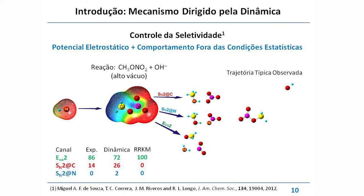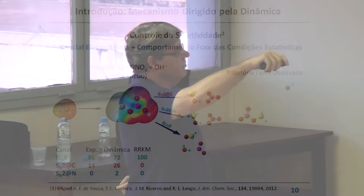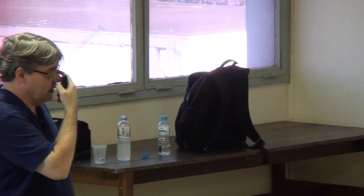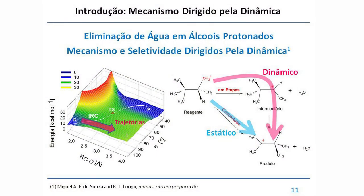Um outro exemplo é aquele em que a reação segue um caminho que não é o de mínima energia e mostra regiões da superfície de energia potencial não mostradas pela teoria de estado de transição. Essa é uma reação simples que os químicos orgânicos conhecem há bastante tempo, feita em fase gás: a eliminação de hidroxila em álcool é bastante conhecida. Basicamente inicia com a protonação da hidroxila e a eliminação de água, gerando um carbocátion que pode sofrer nova eliminação gerando um alqueno, ou então uma substituição.